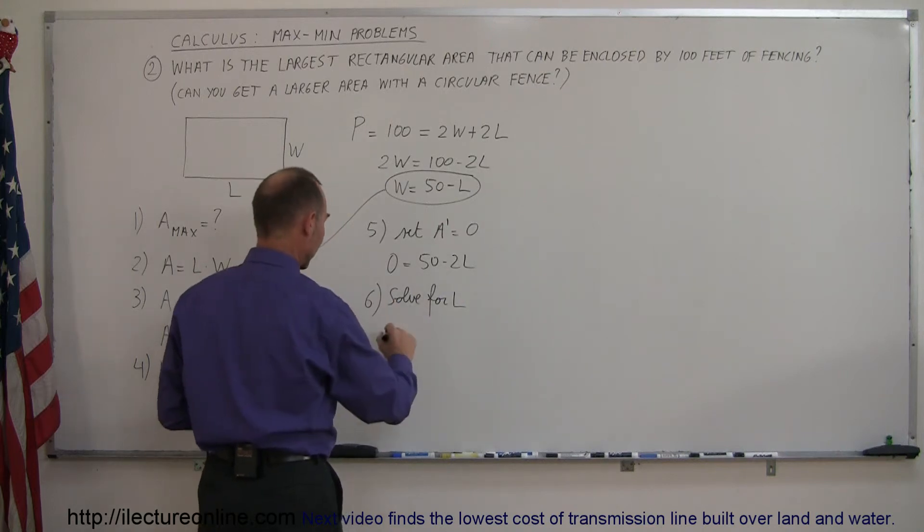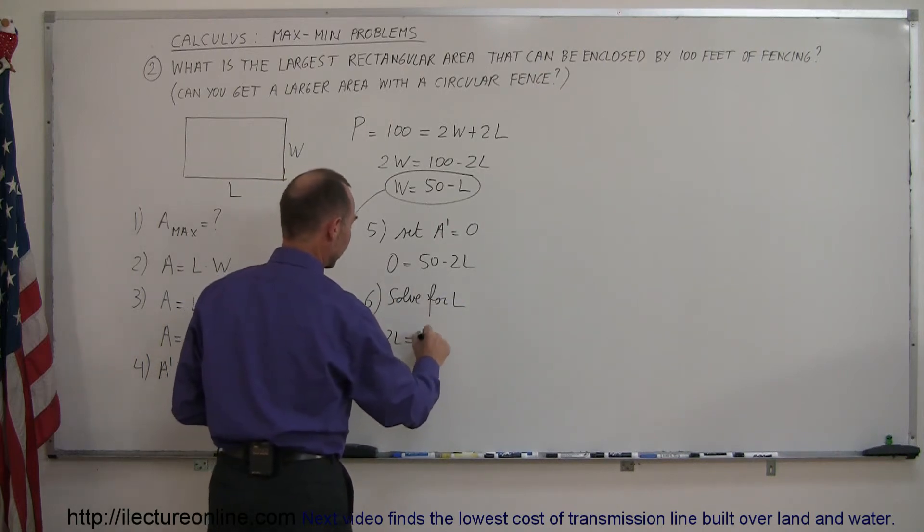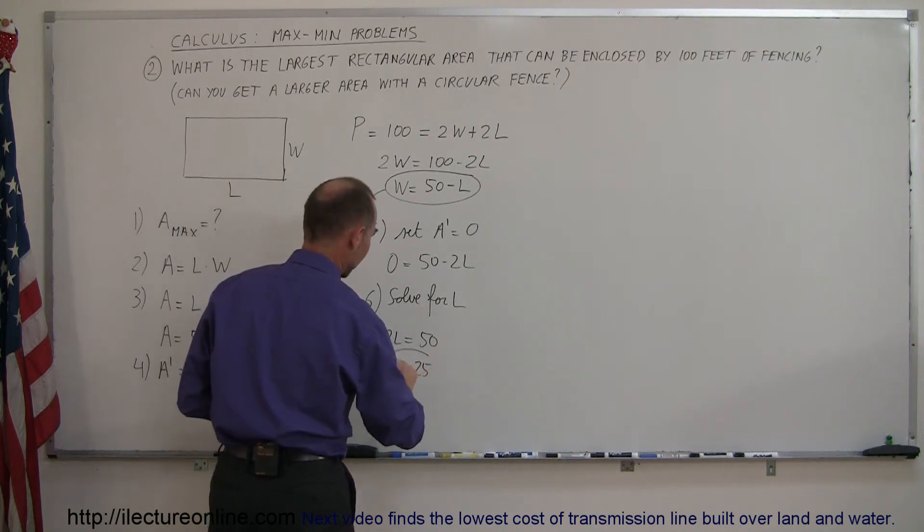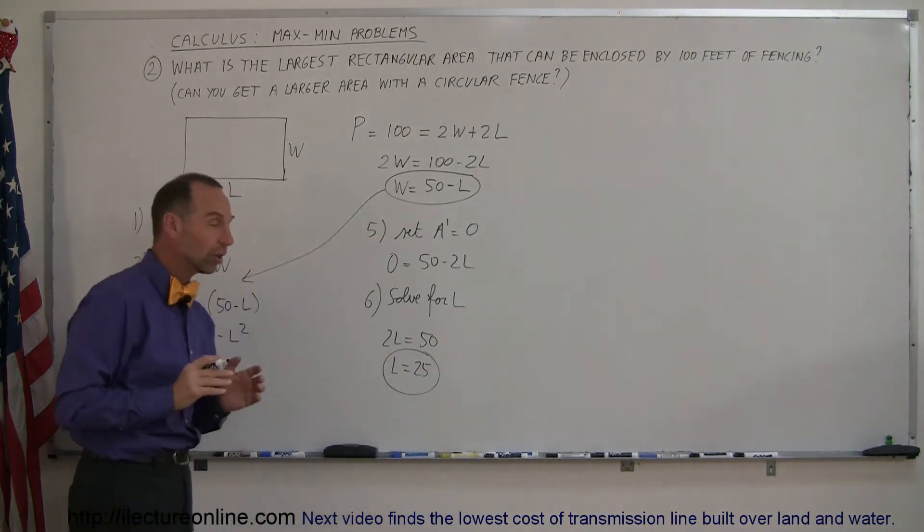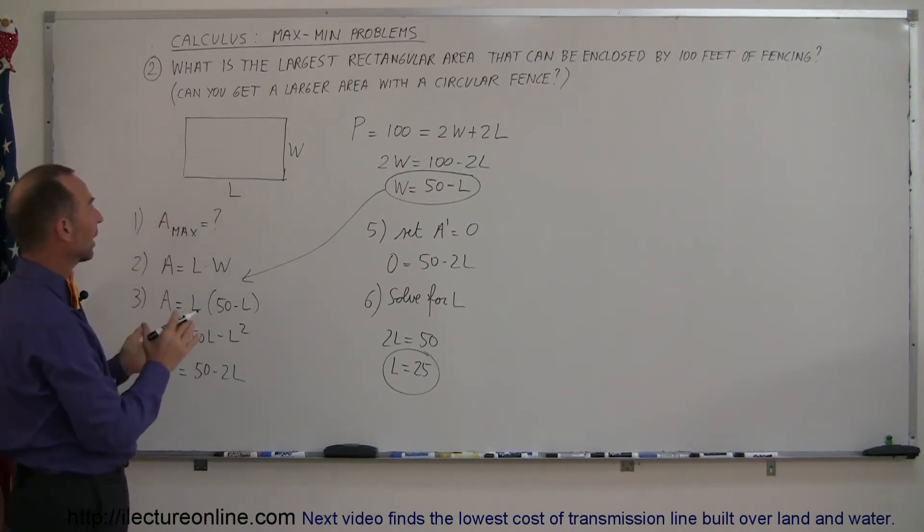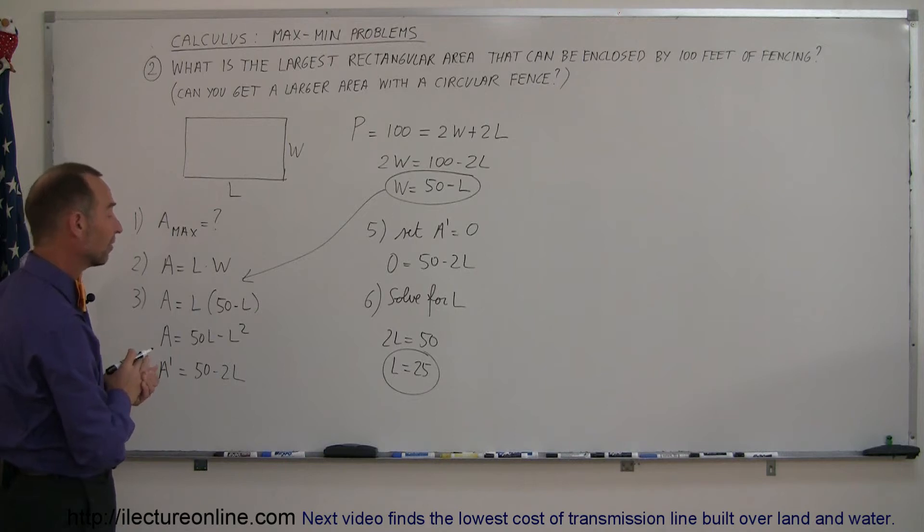And so when I move the 2L to the other side, I get 2L is equal to 50, divide both sides by 2, L equals 25. So in order to get the largest enclosed area, when I try to get a rectangular space with a hundred feet of fencing, the length has to be 25 feet.